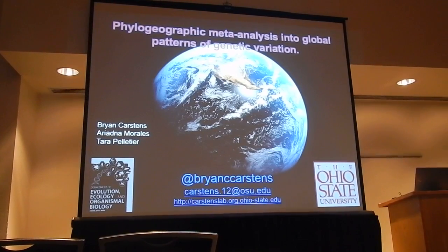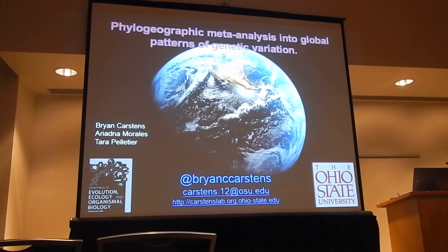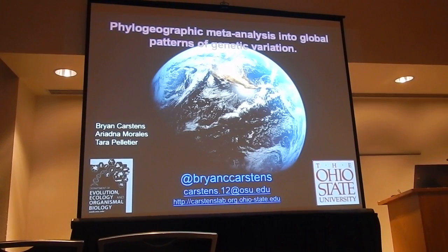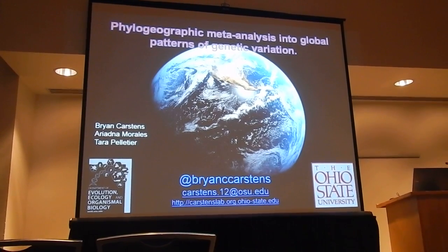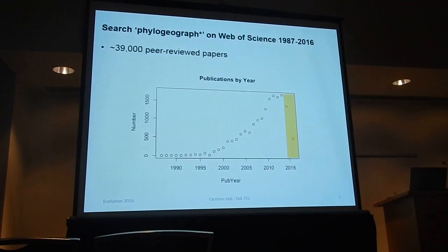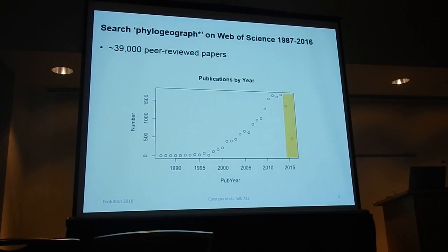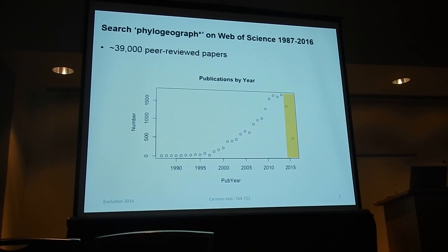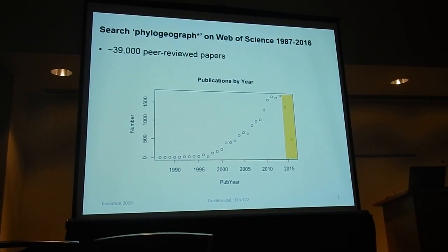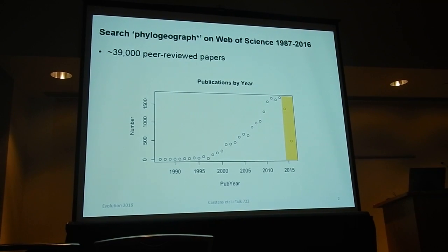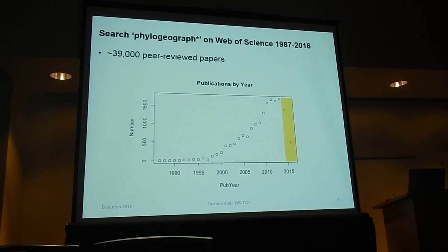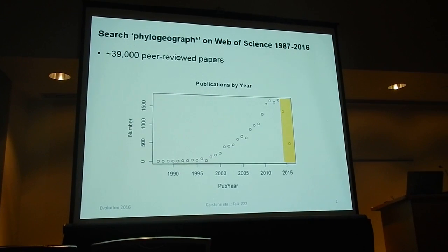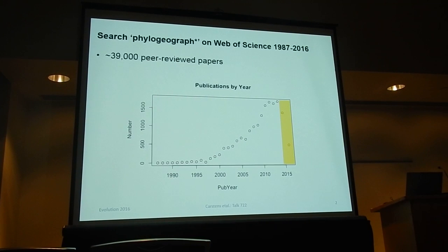It's very common for us to do a study, answer some question about a specific species, and then move on. One of the reasons I'm interested in this is that if you do literature searches, you realize very quickly that there are a large number of papers published since 1987, when John Avise and colleagues came up with the phrase 'phylogeography.' This is a plot of publications by year.